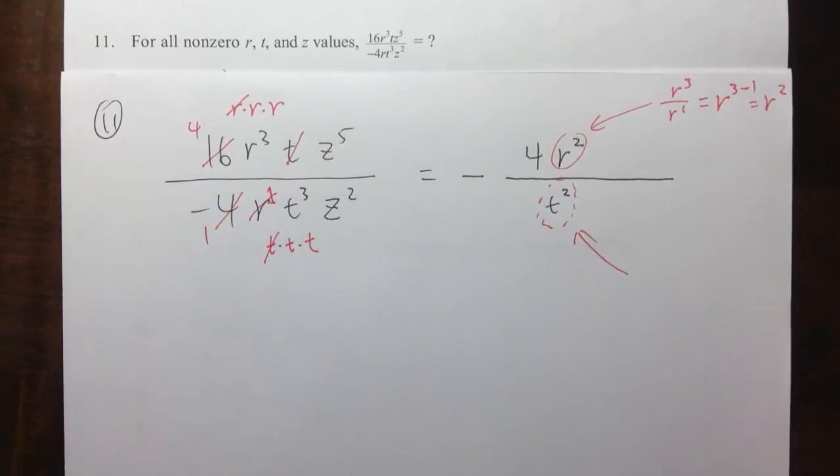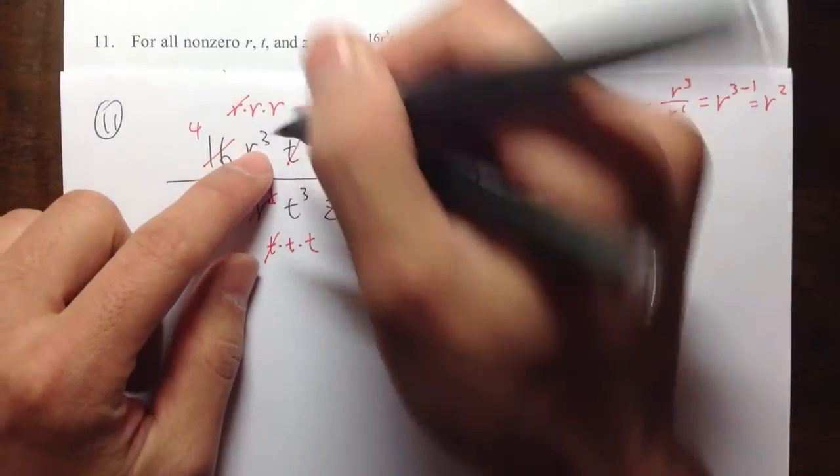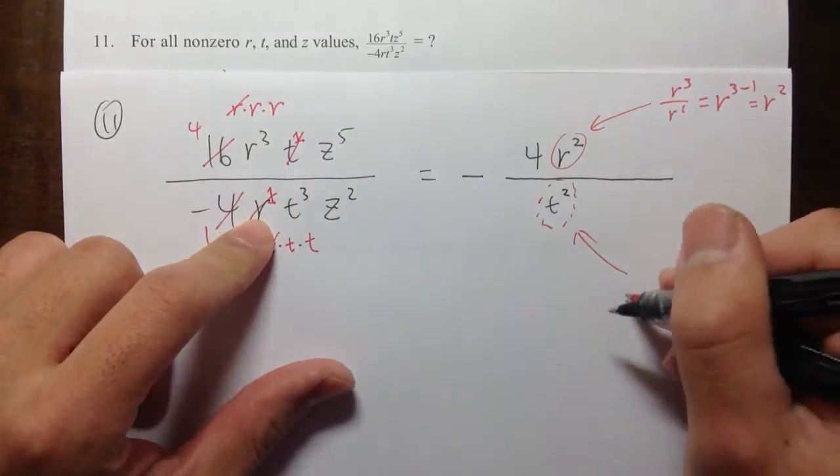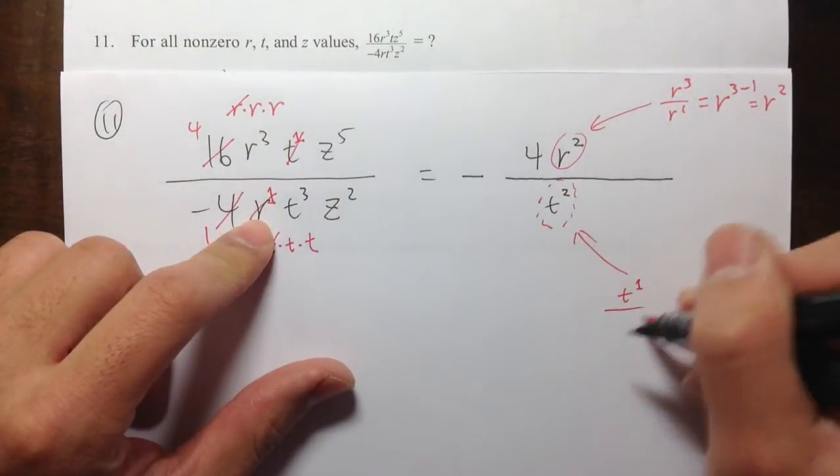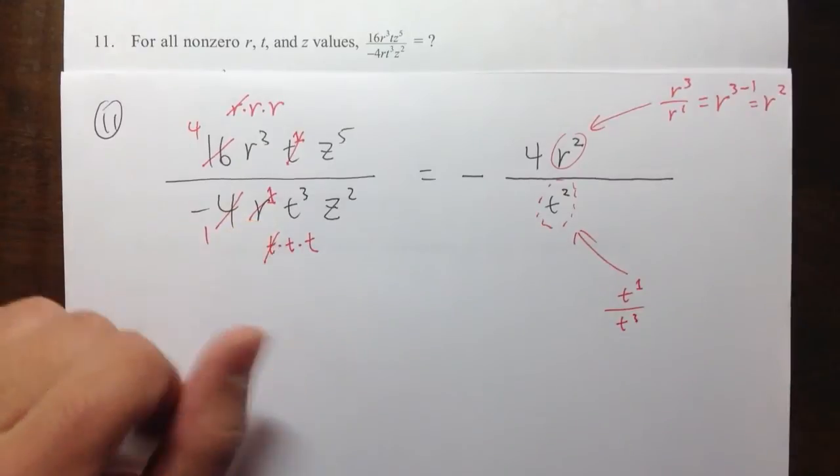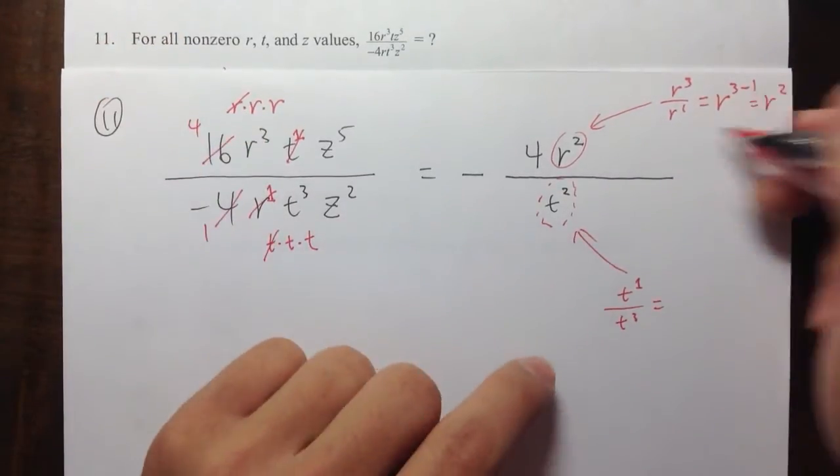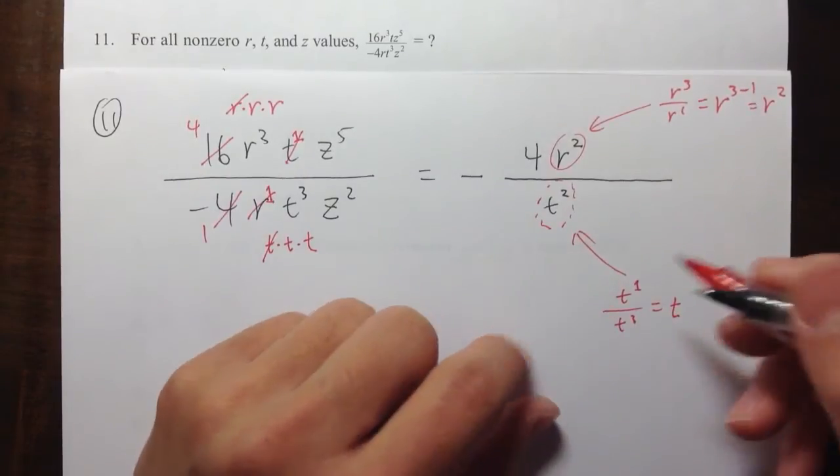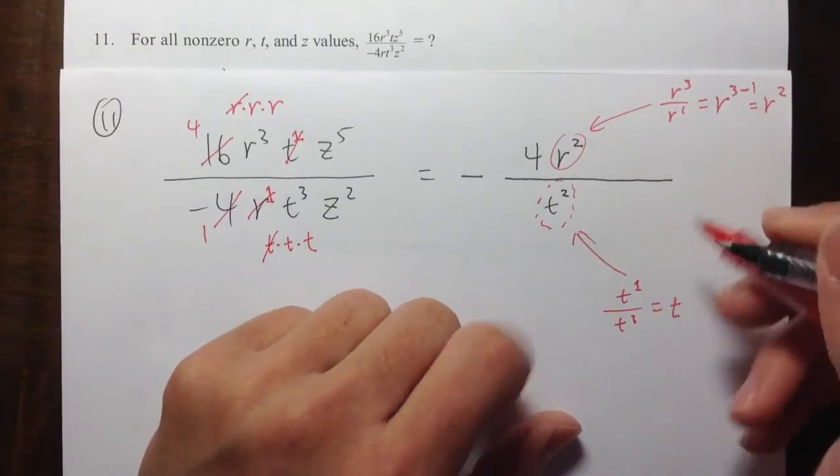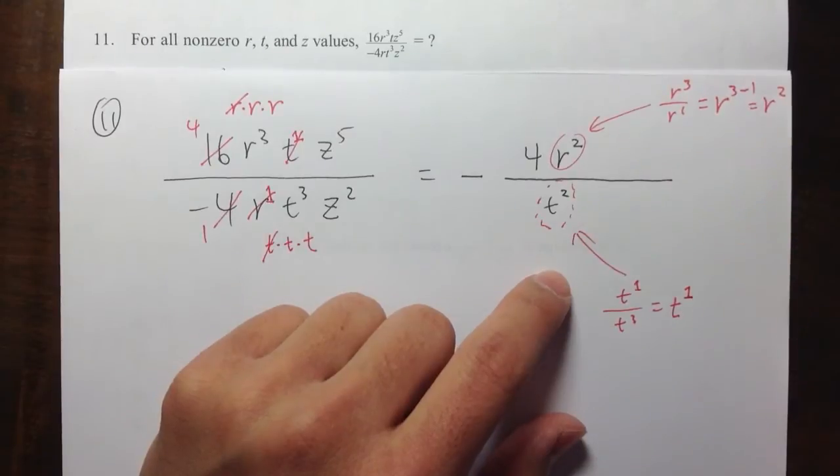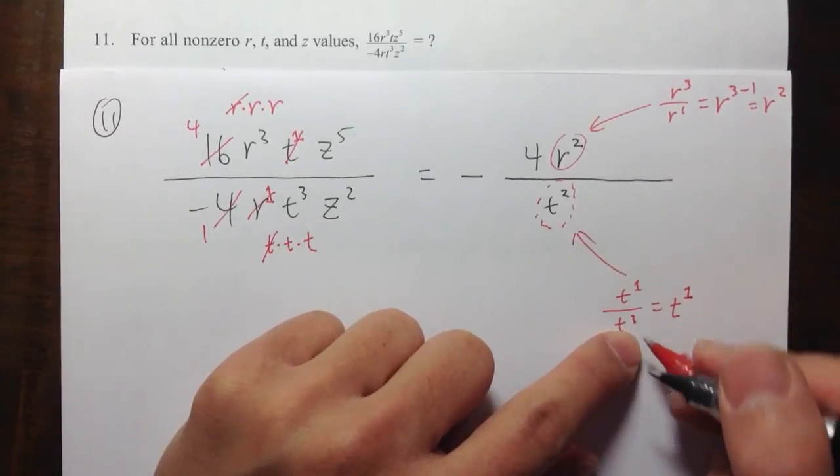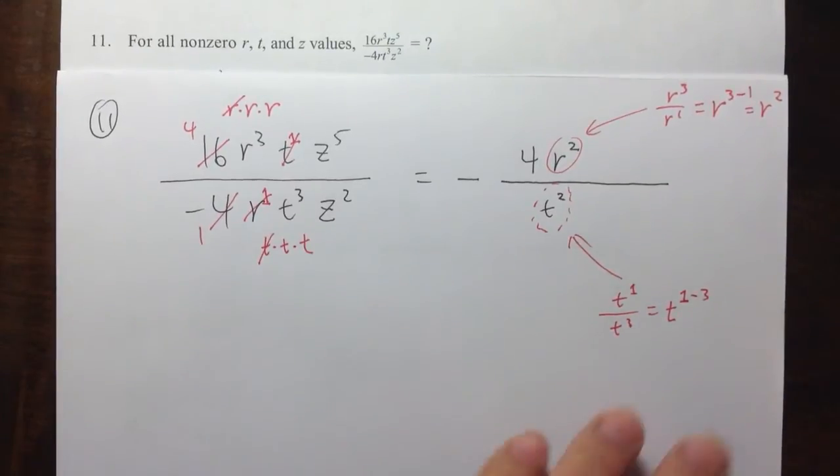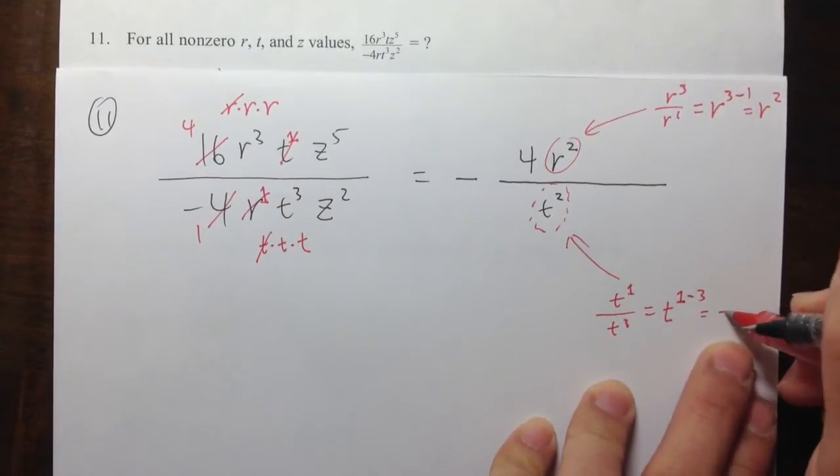So there's another way to do this as well. So you can look at this as t to the first power over t to the third power. So as what we did with the r, what we can do is, let me write down the t first, and then take the exponent on the top, which we have the 1 in this case, minus the exponent on the bottom, which is 3. So 1 minus 3. And 1 minus 3 is, of course, equal to negative 2.